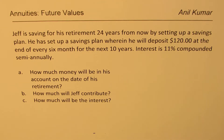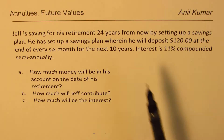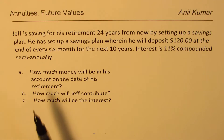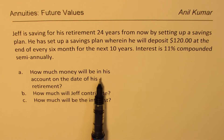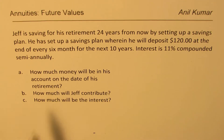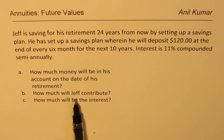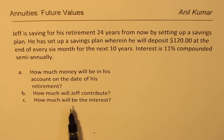The question is: Jeff is saving for his retirement 24 years from now by setting up a savings plan. He will deposit $120 at the end of every 6 months for the next 10 years. Interest is 11% compounded semi-annually, so it's an ordinary annuity — payments are at the end of 6 months and the interest matches. Part A: how much money will be in his account on the date of retirement? Part B: how much will Jeff contribute? Part C: how much will be the interest?